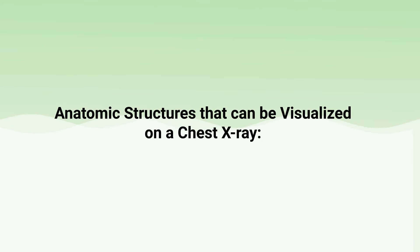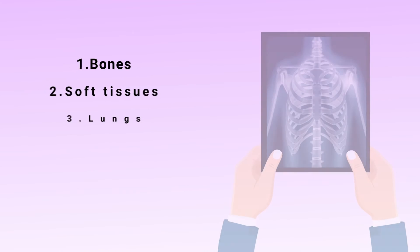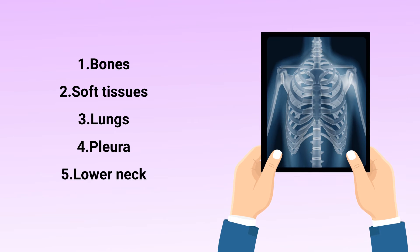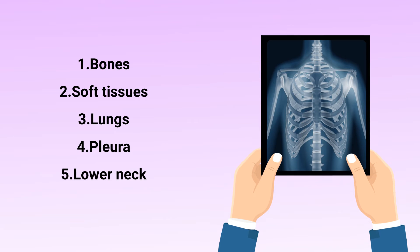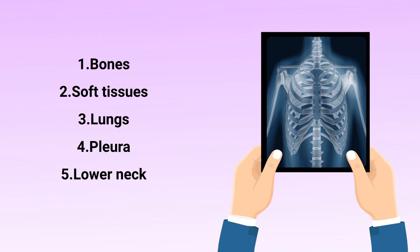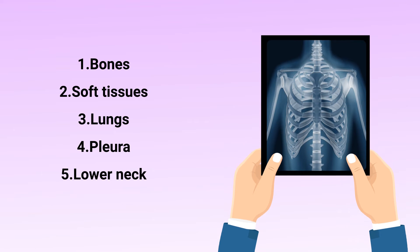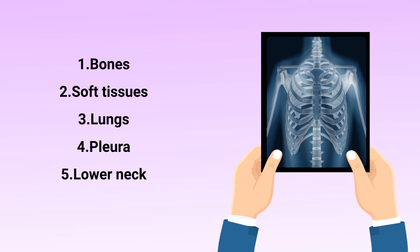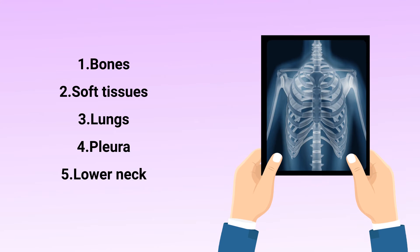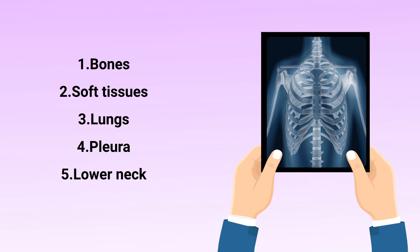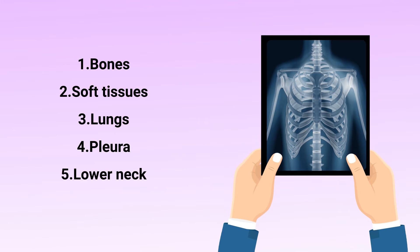The anatomic structures that can be visualized on a chest x-ray include bones such as the ribs, clavicles, and vertebrae; soft tissues including the chest wall, abdomen, and lymph nodes; lungs including the trachea, bronchi, and lung tissue; as well as the pleura and the pleural spaces.